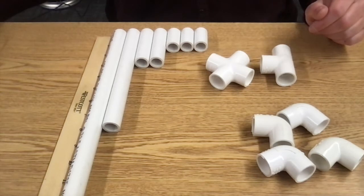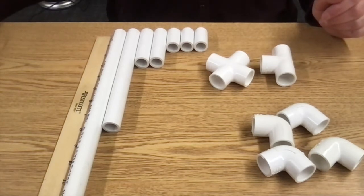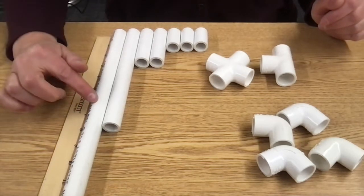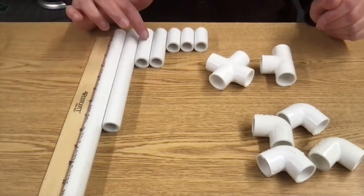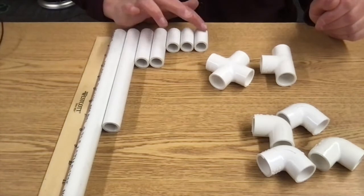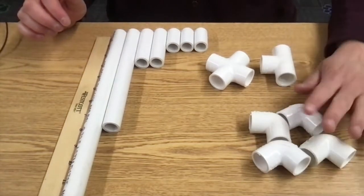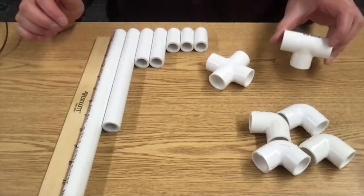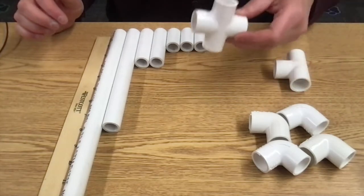Hello. Today we're going to be creating a PVC rocket launcher. I have half inch PVC pipe. I have a 12 inch piece, an 8 inch piece, two 3 inch pieces, three inch and a half, four 90 degree elbows, a T, I'm not sure what they call this, and a four-way.